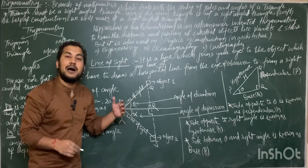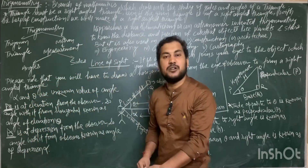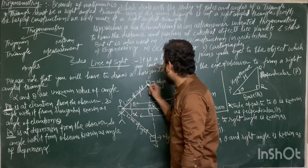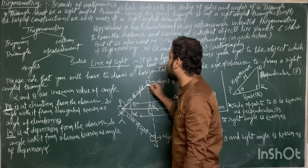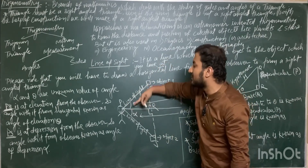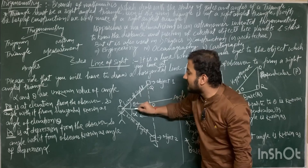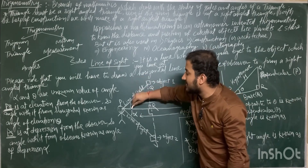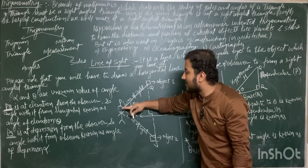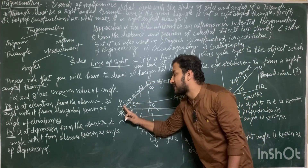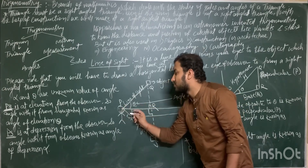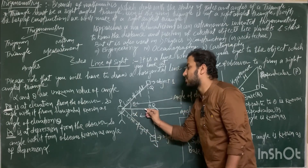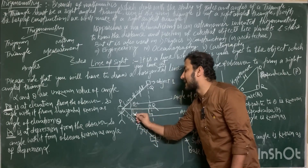Theta and alpha are symbols used here for unknown angles. PQ is a line of sight which is at elevation with this horizontal line — that's why the angle between this horizontal line and this line of sight at elevation is known as angle of elevation. This is the horizontal line. This other line of sight is at depression with this horizontal line, so the angle between this horizontal line and this line of sight at depression is known as angle of depression.